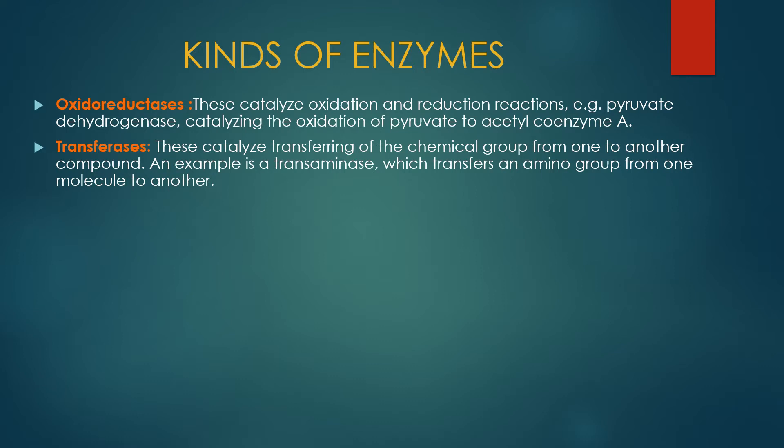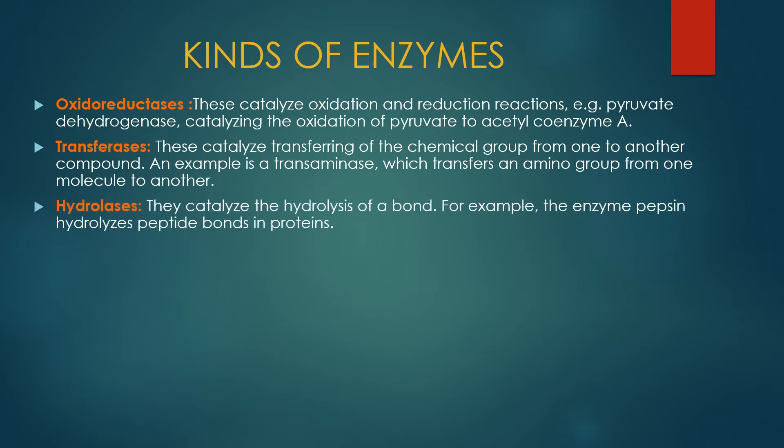Fourth lyases enzymes ہیں جو کہ complex compounds کو simpler compounds میں break کریں گے. For example, aldolases enzymes ہیں جو کہ fructose six carbon compound کو break up کر کے three carbon compounds glyceraldehyde 3-phosphate اور dihydroxyacetone phosphate کے اندر تبدیل کریں گے.